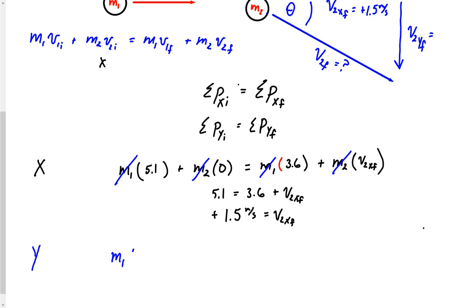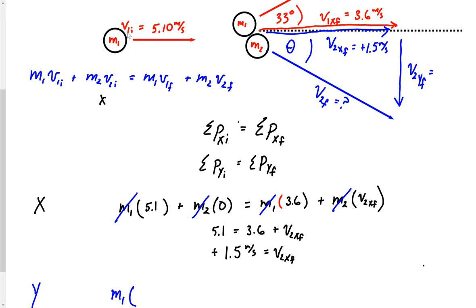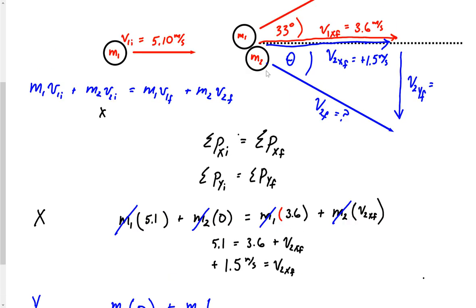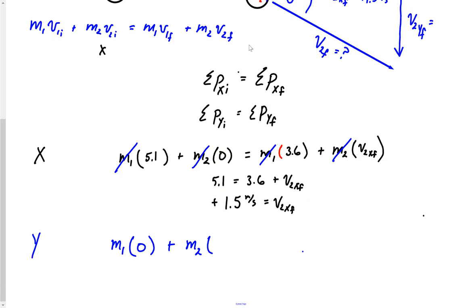m1 times, what is the initial velocity for m1 in the y direction? Well, it's not moving up or down. It's just moving dead to the right. So it had no initial velocity in that direction. Plus, what is m2's initial y velocity? Well, remember, m2 was just sitting there hanging out when all of a sudden m1 smacked it, that cruel m1. So it's a 0.